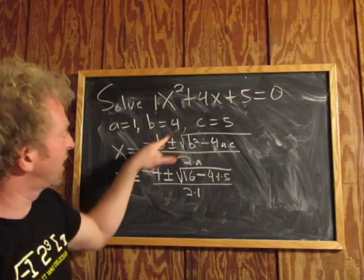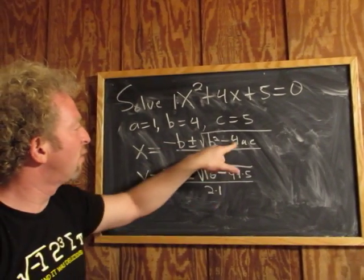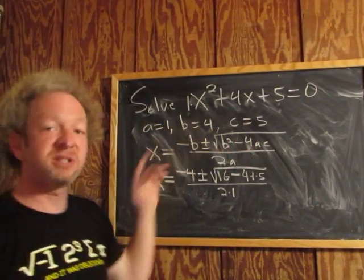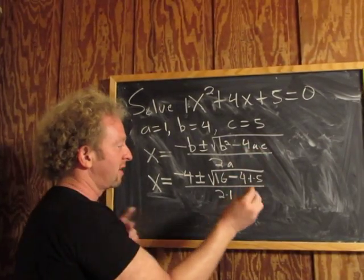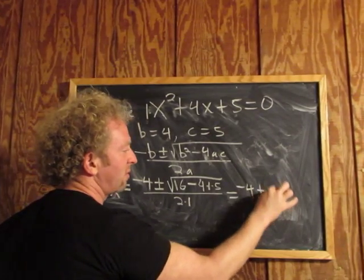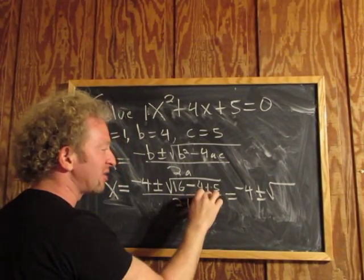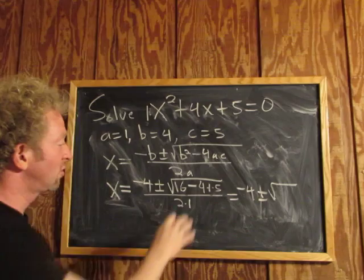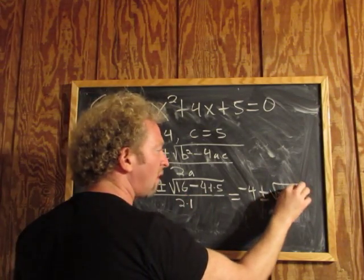So again, b was 4, so we get negative 4, b squared is 16, 4ac, a is 1, c is 5, so we get 4 times 1 times 5. So this is equal to negative 4 plus or minus the square root of 16 minus 20, right? 4 times 5 is 20, so we get negative 4 all over 2.